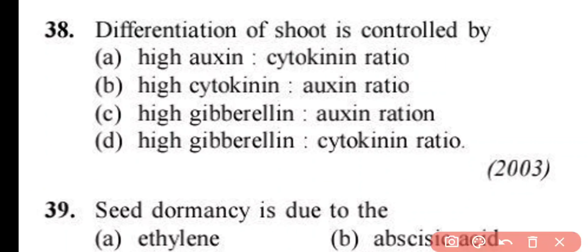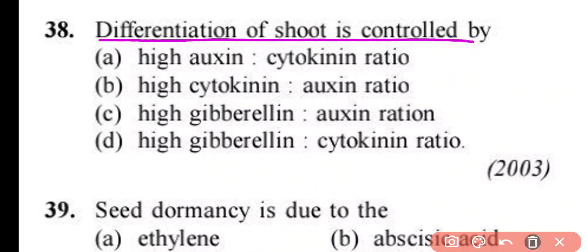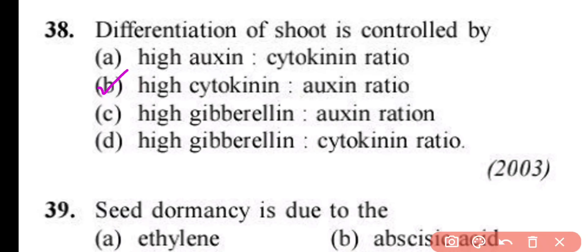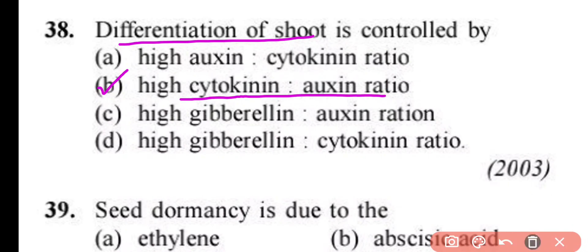Question number 38. Differentiation of shoot is controlled by: high auxin to cytokinin ratio, high cytokinin to auxin ratio, high gibberellin to auxin ratio, or high gibberellin to cytokinin ratio. Correct answer is option B. Shoot differentiation occurs due to high cytokinin to auxin ratio.